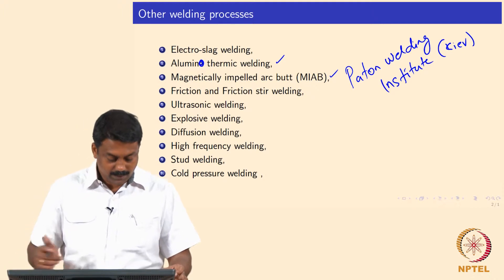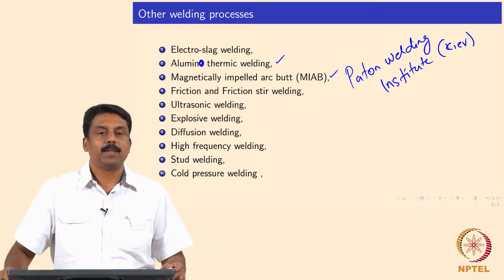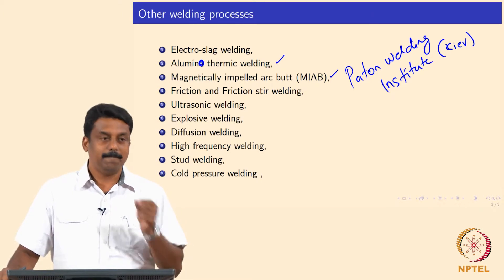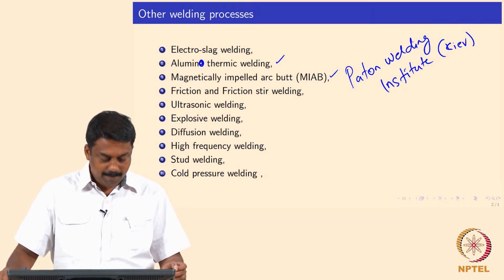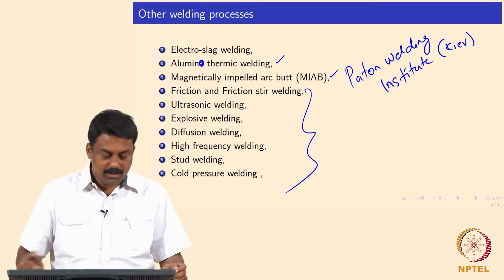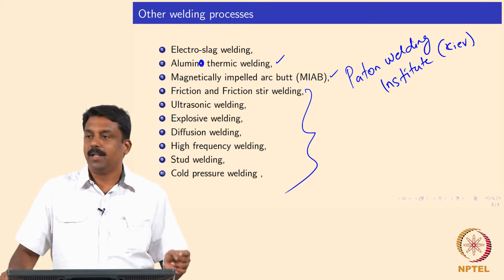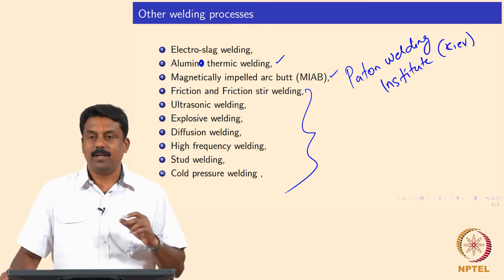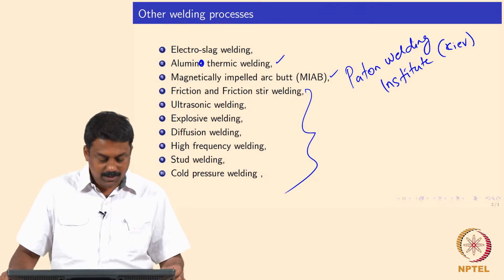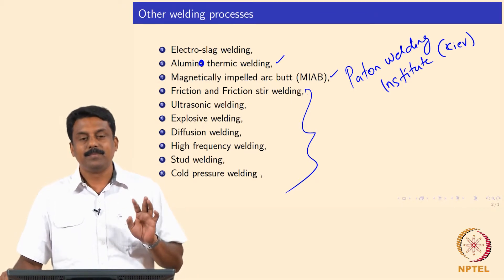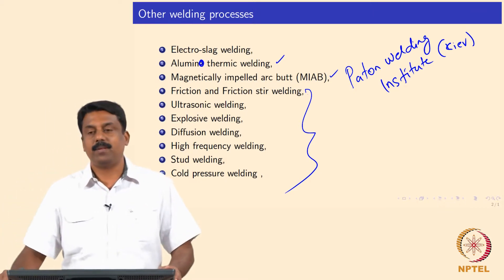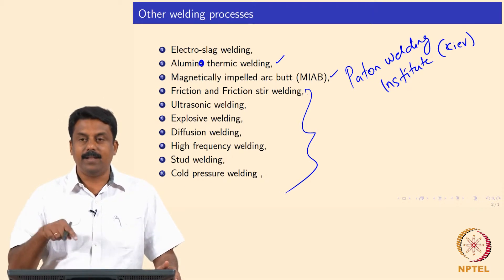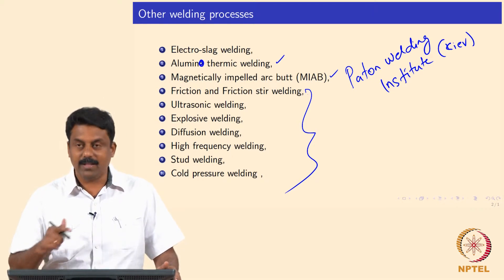Then we will move on to the solid state welding processes: friction and friction stir, ultrasonic welding, explosive, diffusion welding, high frequency, stud welding, and cold pressure welding. These are all solid state or non-fusion welding processes because we do not melt. In the MIAB process, we both melt and apply some upsetting force, similar to flash butt welding. There is a difference between flash butt and MIAB which we will see when we look at that process.